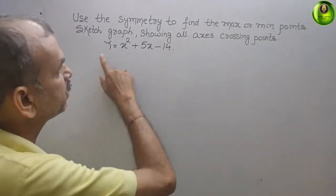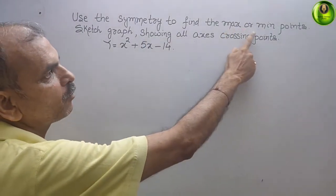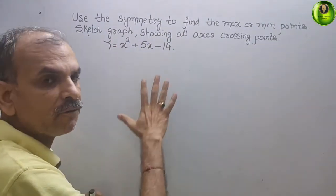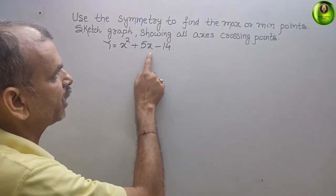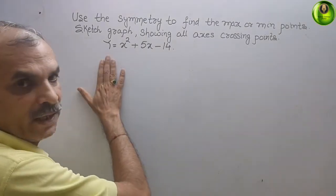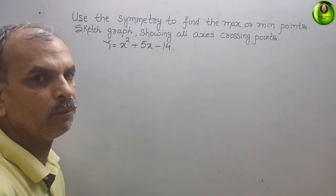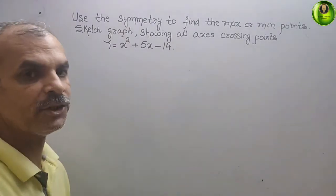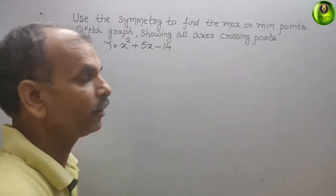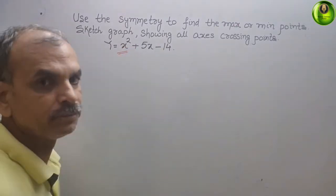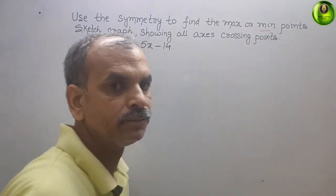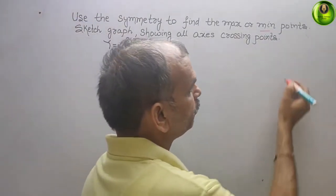The question is: use symmetry to find the maximum or minimum points and sketch the graph showing all axis crossing points. They have given the equation y = x² + 5x - 2. The right side is a quadratic equation. The coefficient of x² is positive, and when the coefficient is positive, we will always get a minimum point.